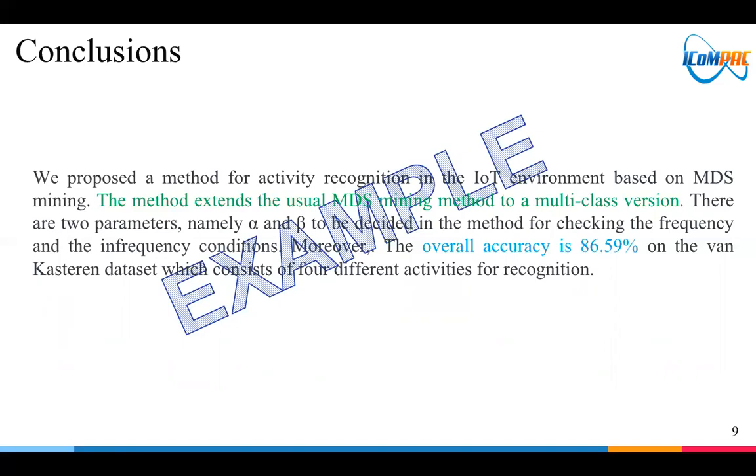There are two parameters, namely alpha and beta, to be decided in the method for checking the frequency and the infrequency condition. Moreover, the overall accuracy is 86.59% on the Van Kasteren dataset, which consists of four different activities for recognition.